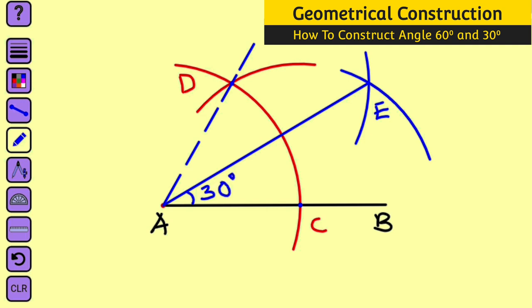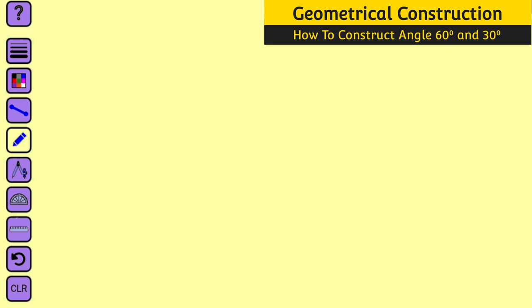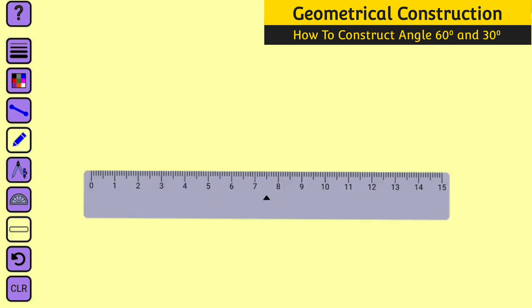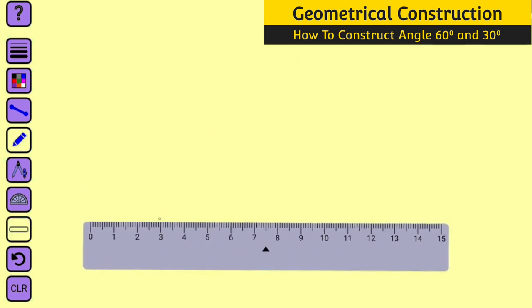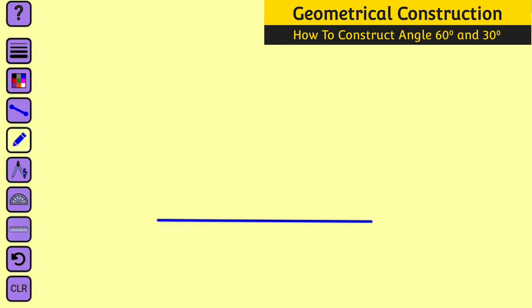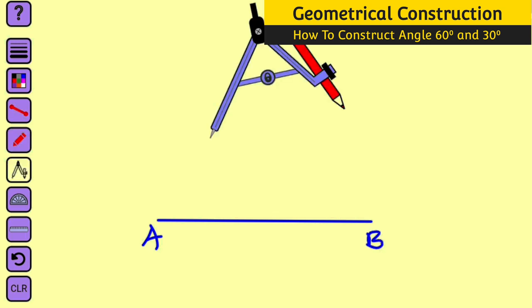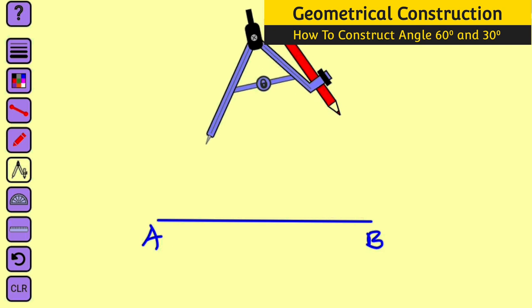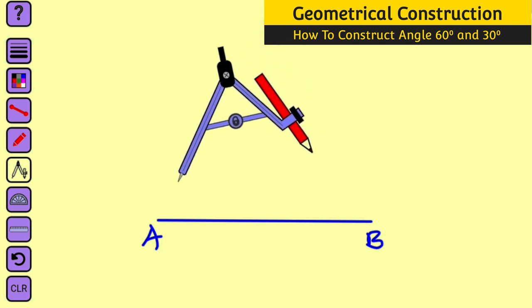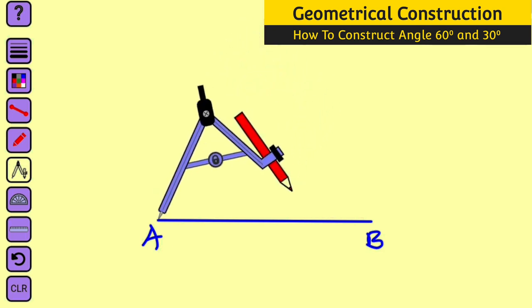Now let me show you another way to construct angle 30 degrees using only arcs. Bring your ruler, draw a straight line, remove it and label the points as A and B. Now bring your compass and place the pointer at either point A or point B using a convenient radius.